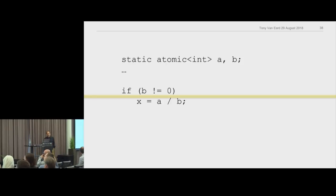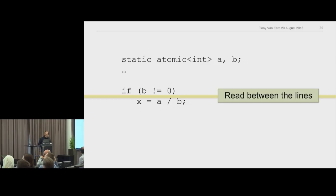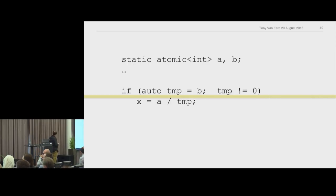Our code still has the error where B can still be zero. How do we fix this? You have to read between the lines — between every two lines of code, something else can happen. The C++14 fix is to make a temporary variable: simple. Now you're protected from B changing.